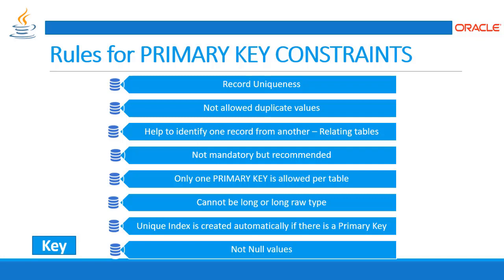A primary key cannot be applied to columns defined as LONG or LONG RAW data types. A unique index is created automatically when there is a primary key, and it cannot support null values — the column must have a certain value. This covers all the rules of the primary key.